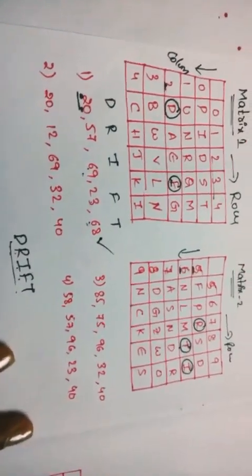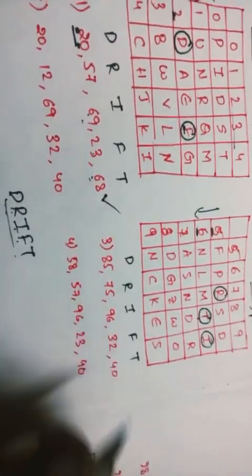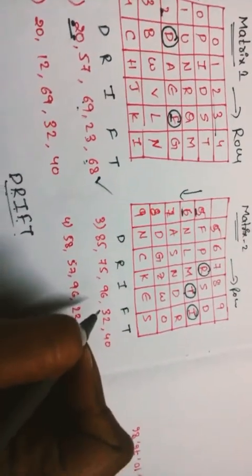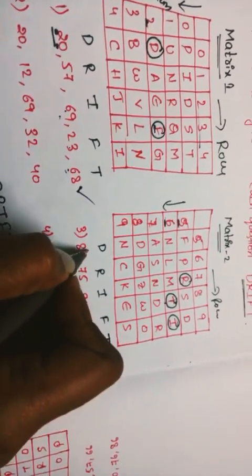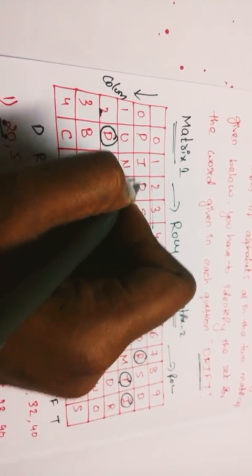So option one appears correct. But for clarification, let's also check option two. Option two also satisfies the full word — D, R, I, F, T — all letters are matched. However, we note that option one is the definitive answer. Let's verify: 8,5 — the first number is column, second is row — D is checked at that position.